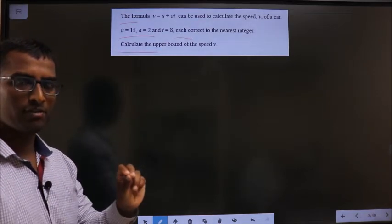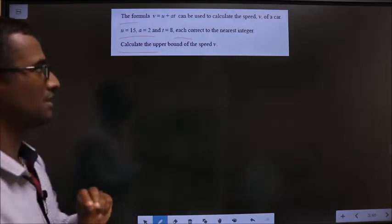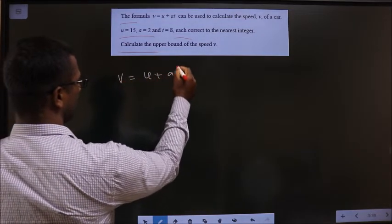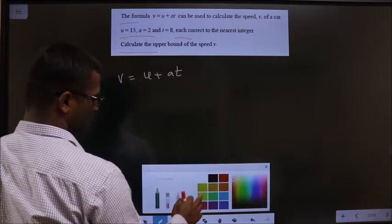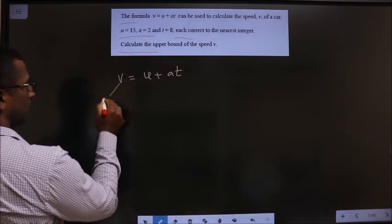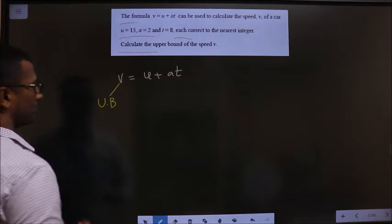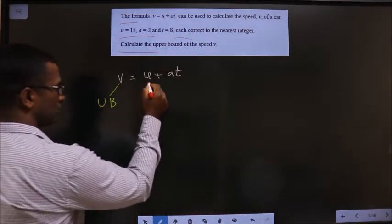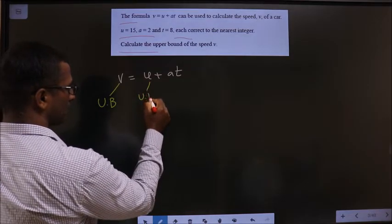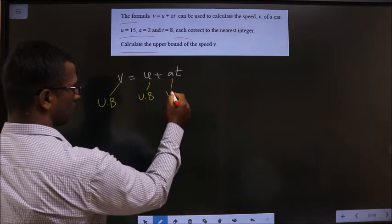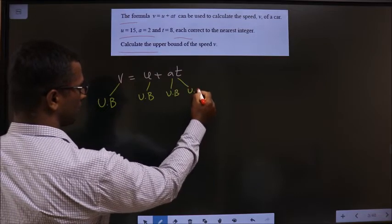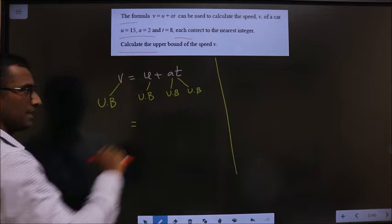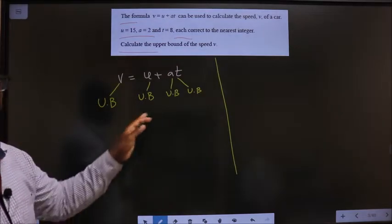Given formula for V is V equal to U plus AT. Now, we have to find upper bound for this one. To get the upper bound for this one, for U also I should take upper bound. For A also I should take upper bound, for T also I should take upper bound. Let us find upper bound for each.